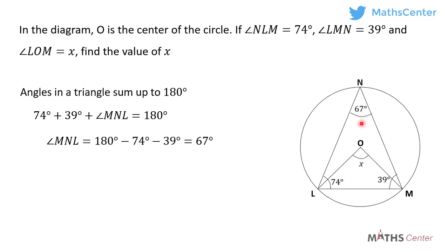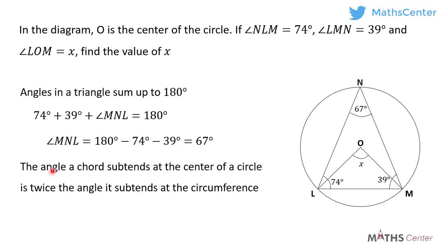This information can help us to get the value of X, because we know that in a circle, the angle a chord subtends at the center of the circle is twice the angle it subtends at the circumference.